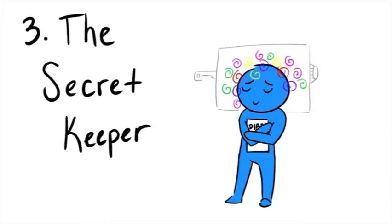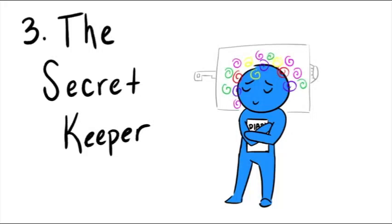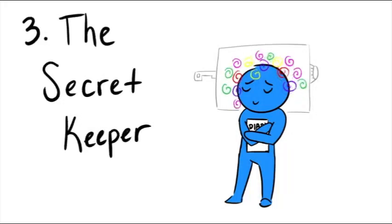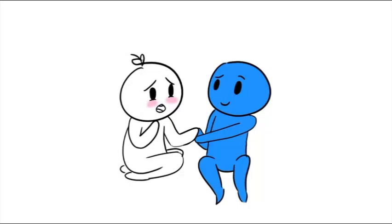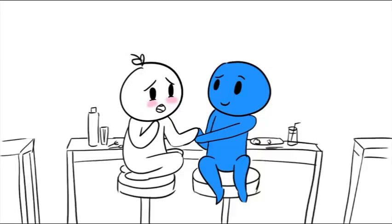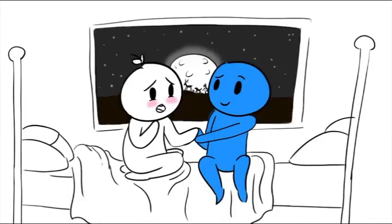Number three, the Secret Keeper. This type of friend is someone most of us need in our lives, no matter our age. The Secret Keeper is the one we tell all of our deepest, darkest secrets to, whether it's during a quiet lunch hour or the middle of the night.